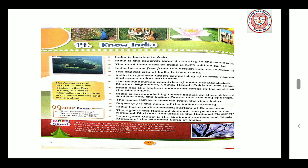Know India: India is located in Asia. India is the seventh largest country in the world in area. The total land area of India is 3.29 million square kilometers. India became free from British rule on 15 August 1947. The capital city of India is New Delhi. India is a federal union comprising 29 states and seven union territories. The neighboring countries of India are Bangladesh, Bhutan, Myanmar, China, Nepal, Pakistan and Sri Lanka.